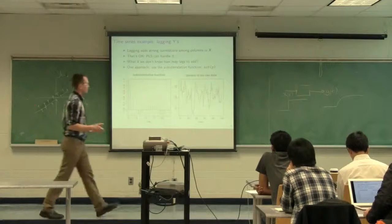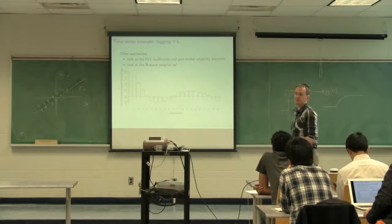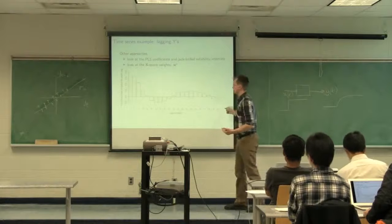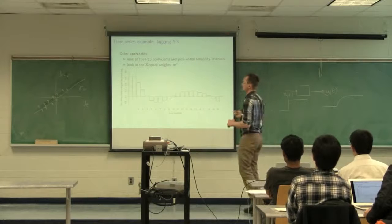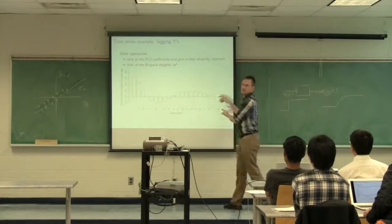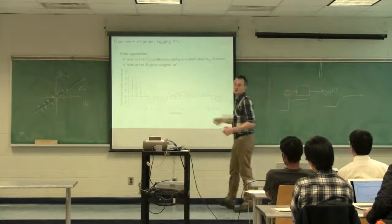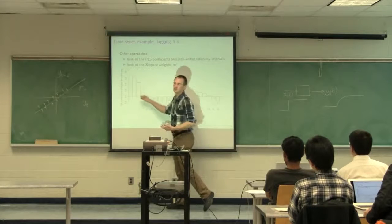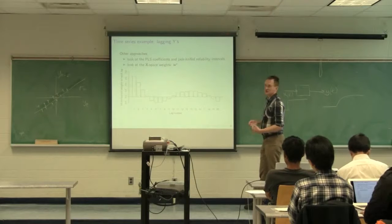That's one way of figuring out the number of lags to use. The other approach is brute force: add a whole lot of lags to your x-space and look at the loadings plot. Here I've plotted one variable lagged 20 times. The coefficient plot shows the same structure as the autocorrelation function. Again, I would say three lags would be useful to keep in the model, because those three weights are certainly the strongest.